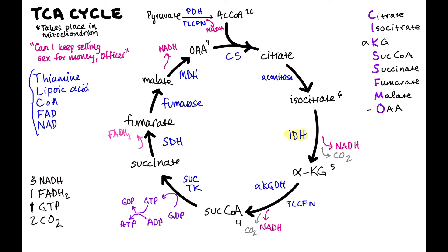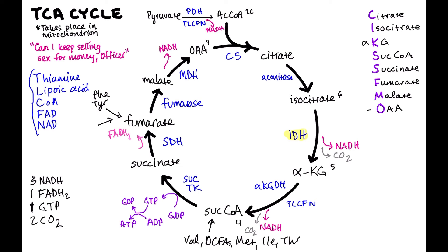So our products from the TCA cycle are: three NADHs (each generating 2.5 ATPs in the electron transport chain), one FADH2 (generating 1.5 ATPs), one GTP (an ATP equivalent), and two CO2s. Additionally, succinyl-CoA is the end product of the VOMIT pathway — valine, odd-chain fatty acids, methionine, isoleucine, and threonine — coming through propionyl-CoA and methylmalonyl-CoA. Fumarate is the end step of phenylalanine and tyrosine metabolism, and also a byproduct of the urea cycle.